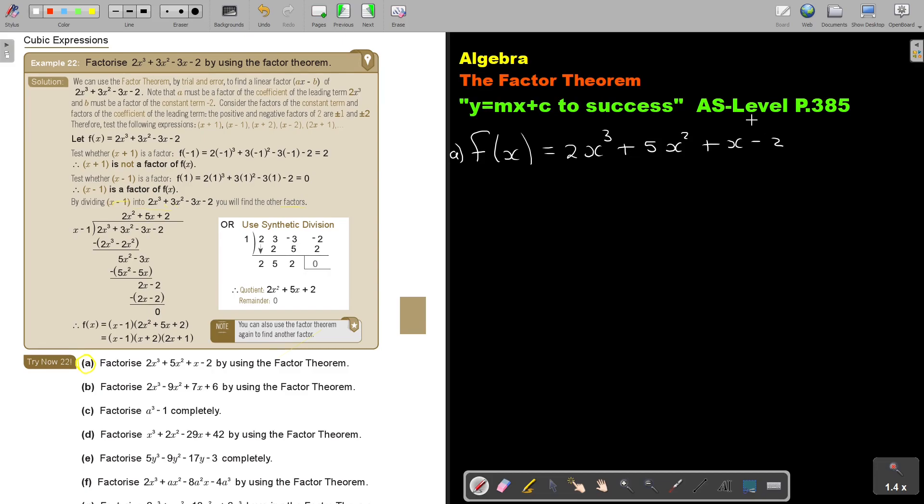Now, because this is 2, usually I start with x plus 1, because 1 and 2 is a factor, or x minus 1. You can even put it, but I think sometimes it's better just to write it quickly down. So, for this one, remember, I will put F minus 1, and for this one, if I put this equals 0, it's 1. So, let's just quickly test.